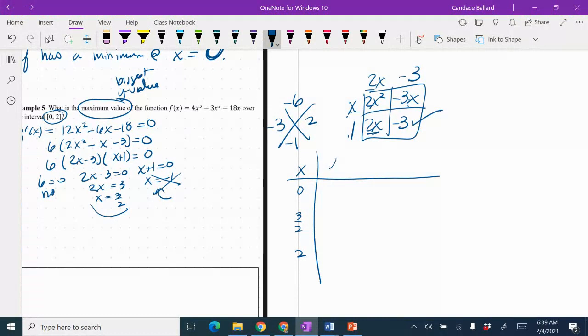And I have to plug these back into the original function f of x. So I'm plugging into this. So when I plug 0 into that, I get 4 times 0 cubed minus 3 times 0 squared minus 18 times 0, which is going to be 0.